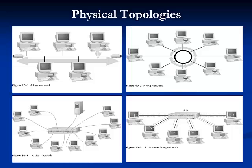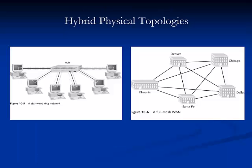Three simple physical topologies — the layout of nodes on a network — exist. They are the bus, star, and ring. Few organizations use simple physical topologies; rather, they use a hybrid of these simple shapes. The star-wired bus hybrid topology is commonly used on modern Ethernet networks, the star-wired ring hybrid topology is used on modern Token Ring networks, and mesh topologies — in which nodes are directly connected to more than one other node — are commonly used on WANs, or wide area networks.